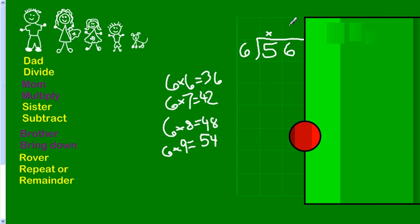6 times 10 would be 60, so that's too much. So, this is going to be a 9. Because 9 times 6 is 54. There are 9 6s in 56. That's 54. That's subtract time.